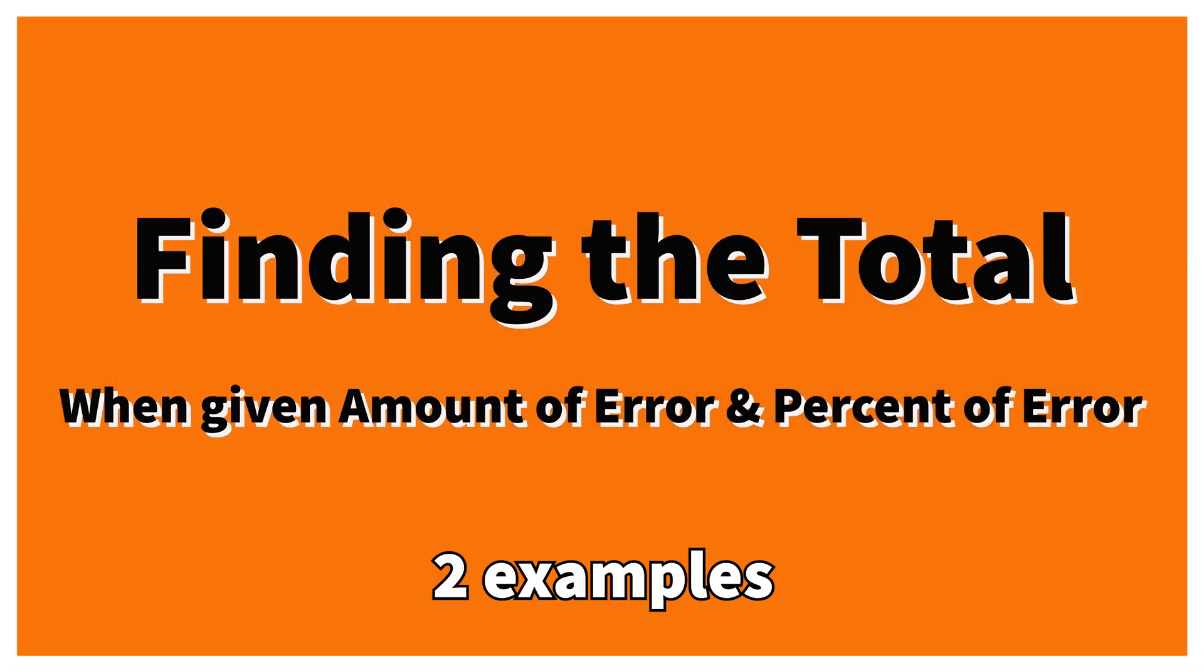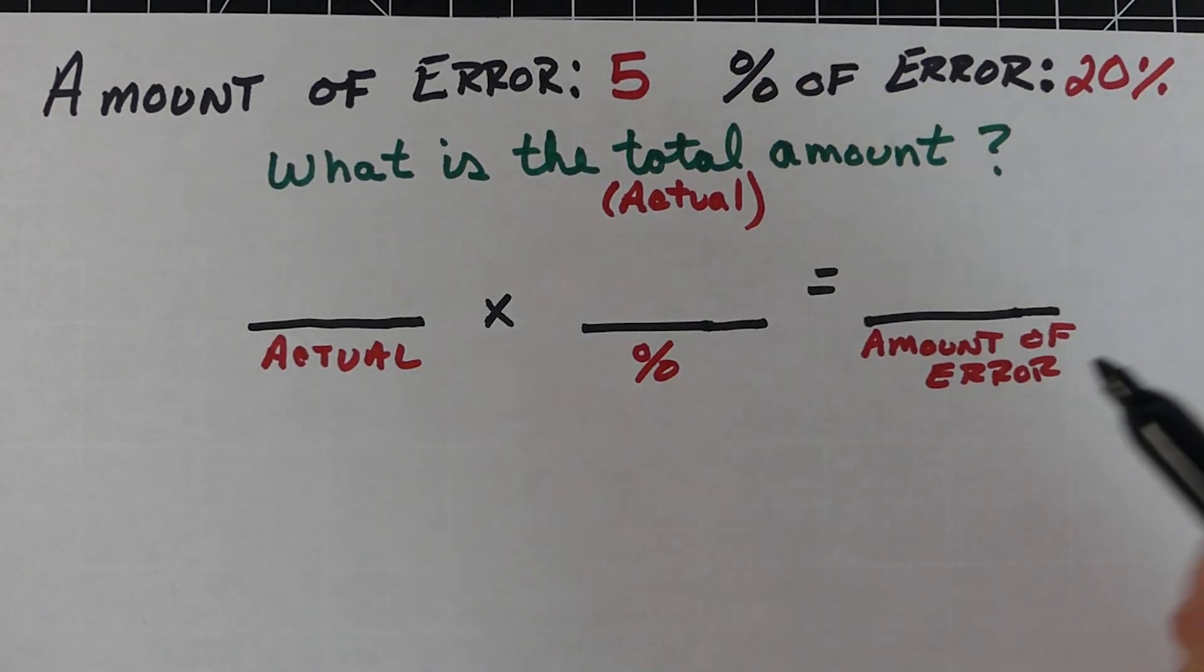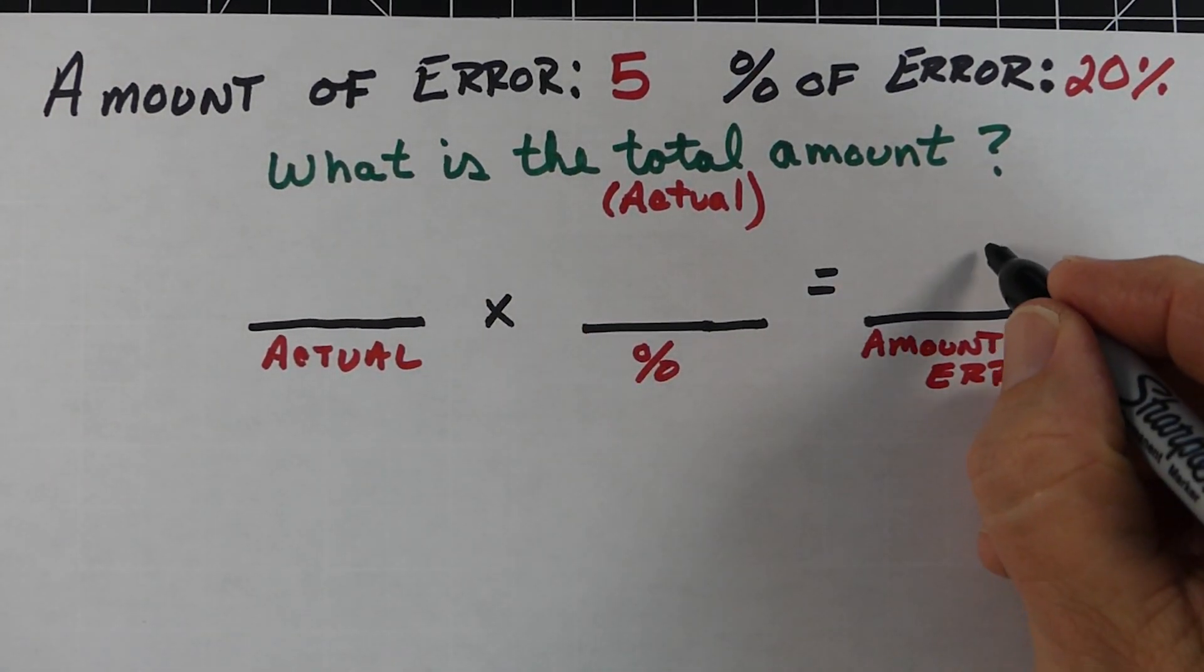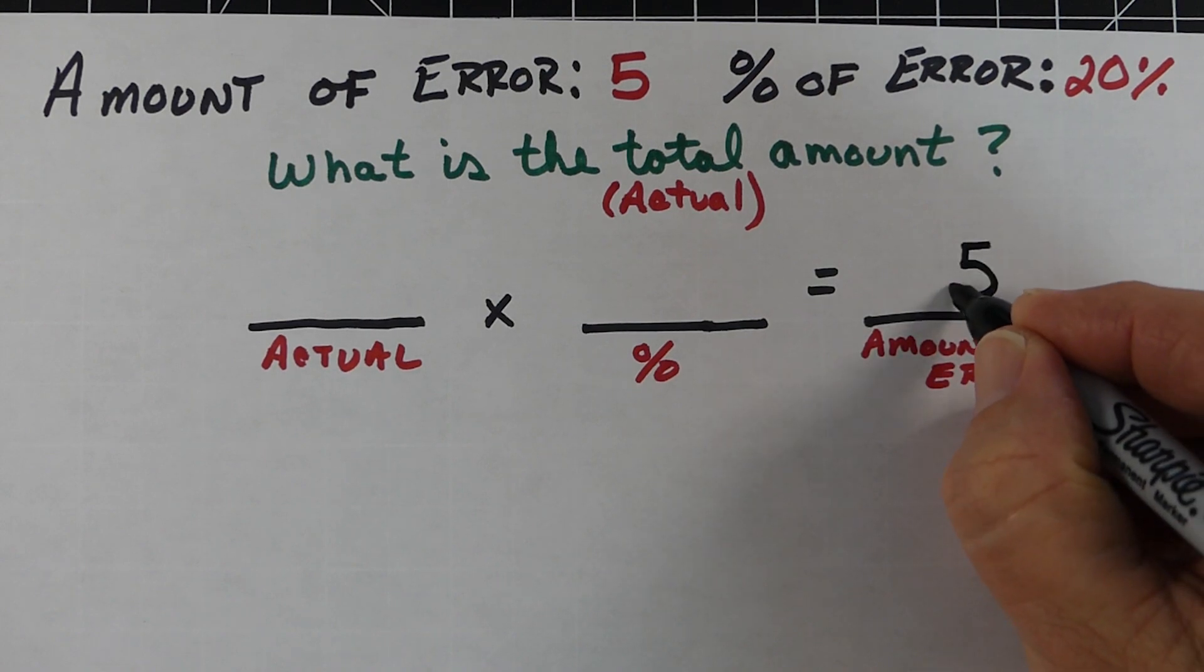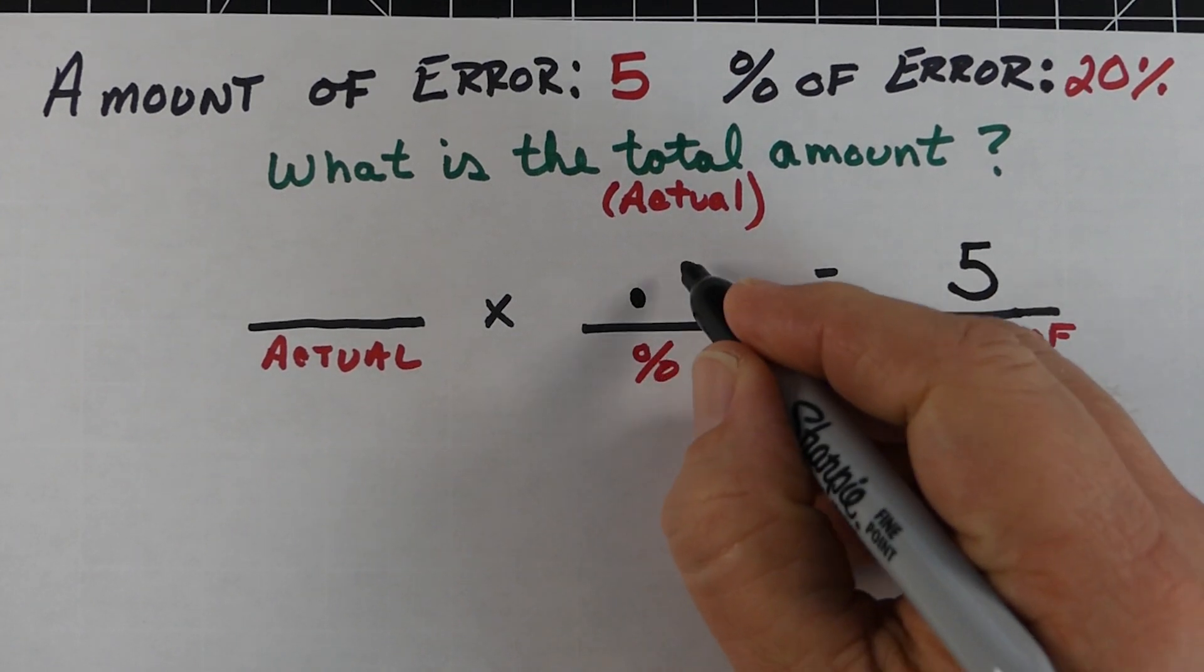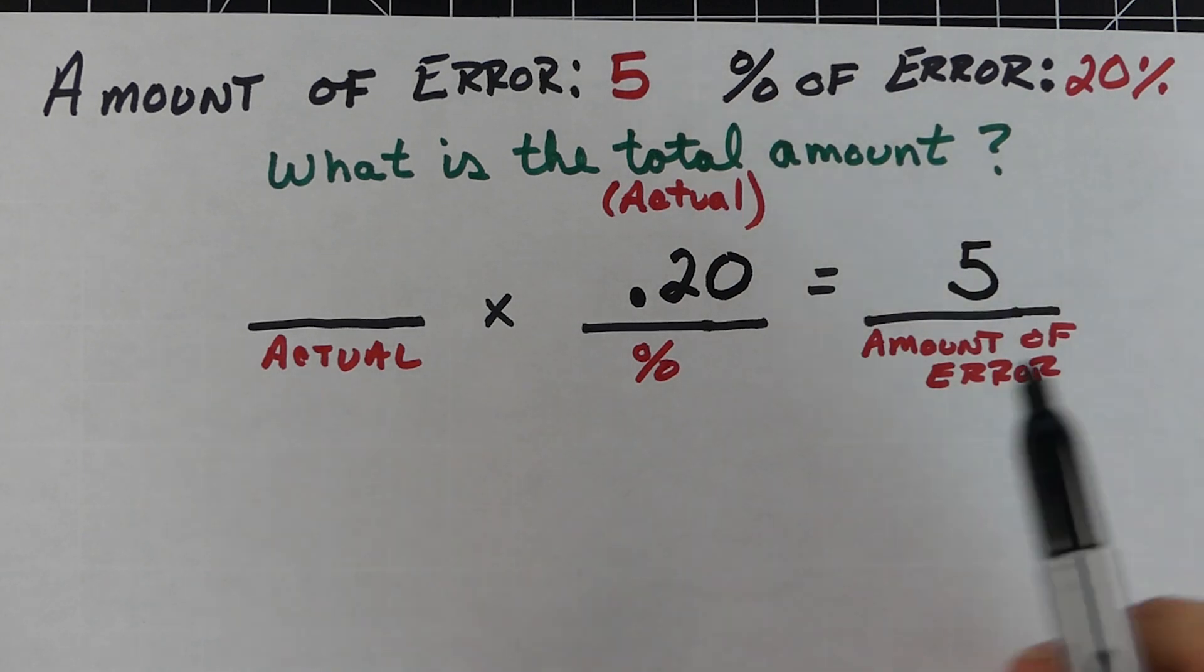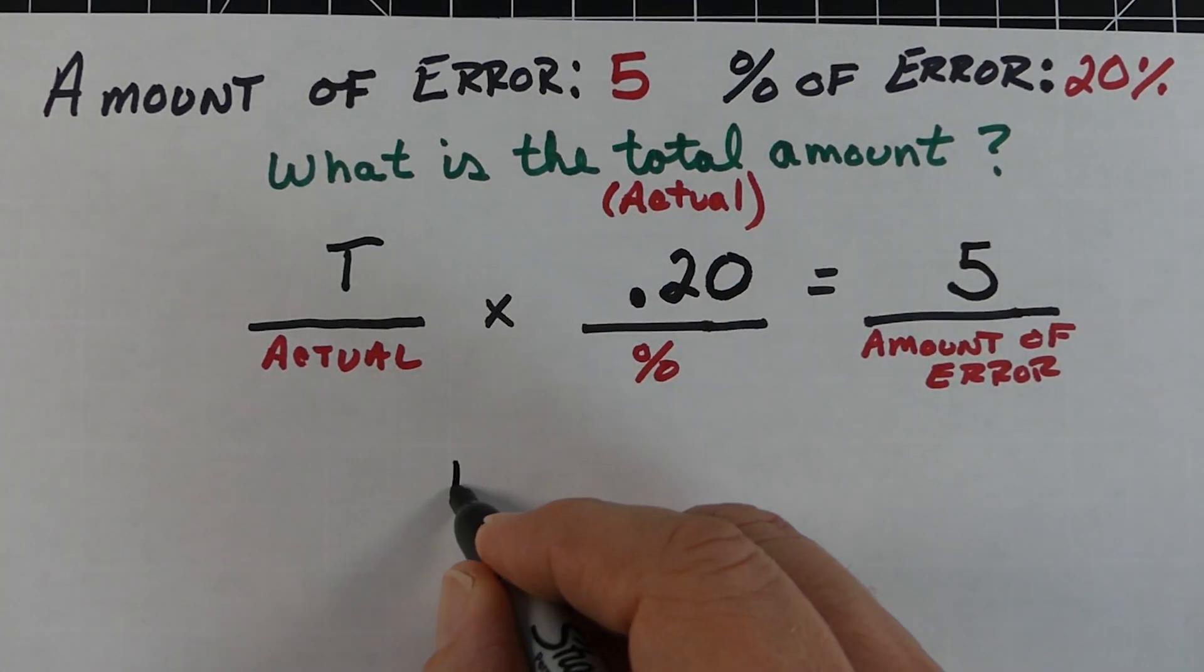Sometimes you might get problems where they give you the amount of error and the percent of error, and you have to find the actual real amount. In this one, the amount of error was 5 and the percent of error was 20%, so we'll write that as decimal 0.2 or 0.20.